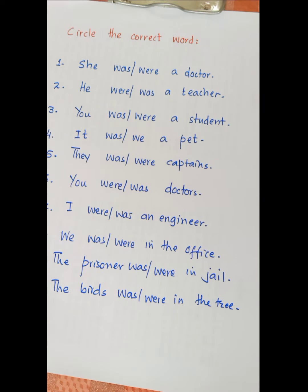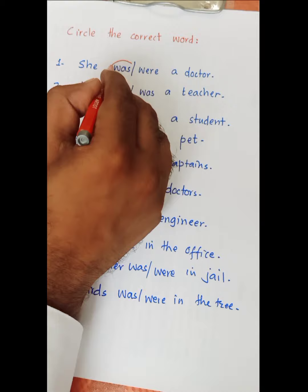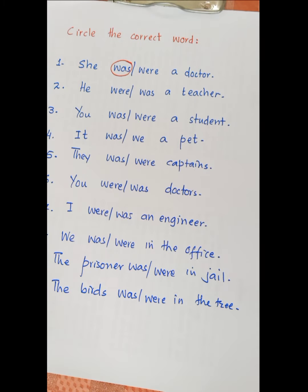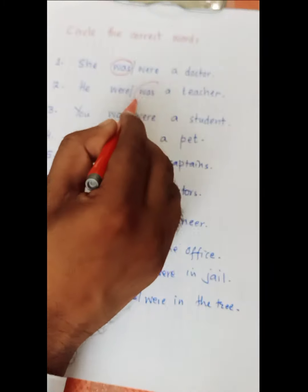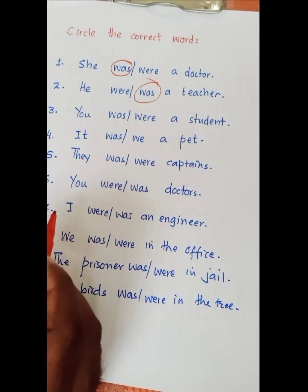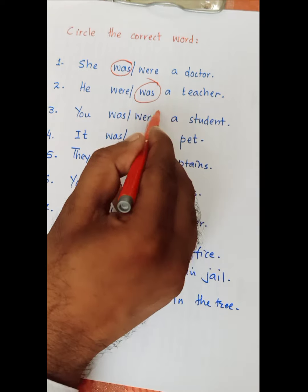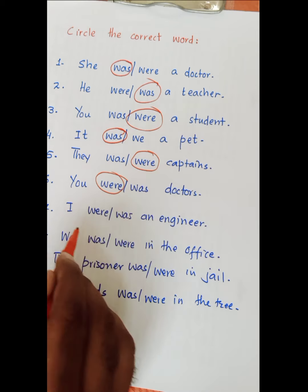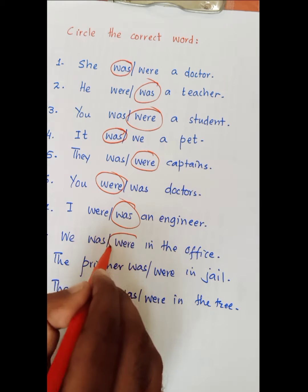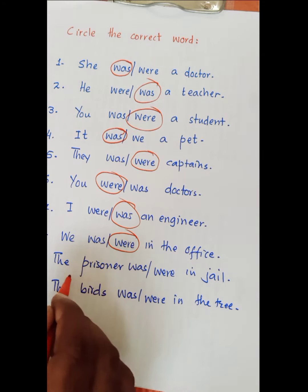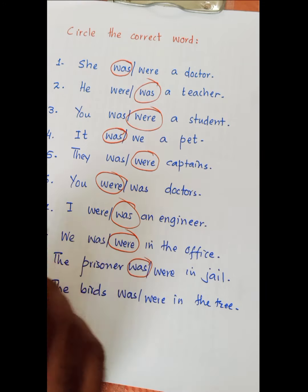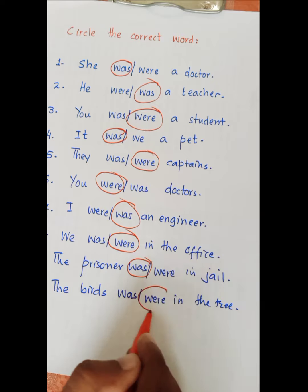Now let's circle the correct word. 'She was a doctor', 'He was a teacher', 'You were a student', 'It was a patient', 'They were captains', 'You were doctors', 'I was an engineer', 'We were in the office', 'The prisoner was in the jail', 'The birds were in the tree.'